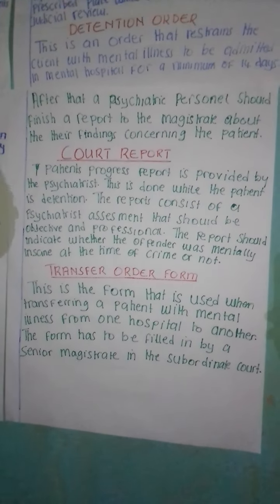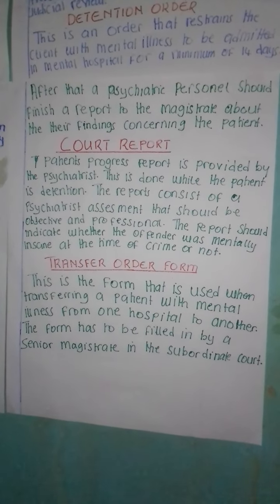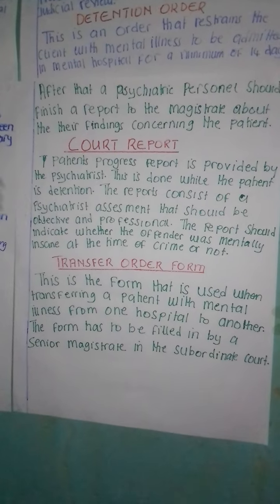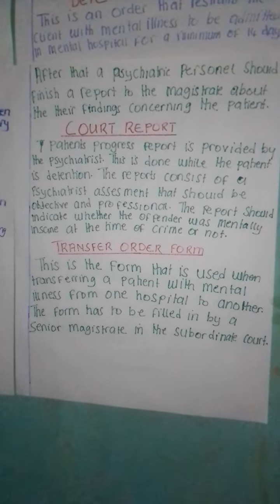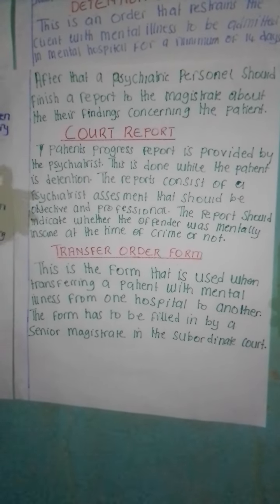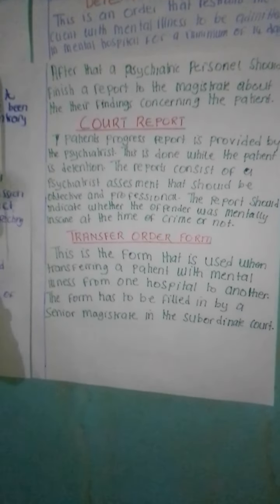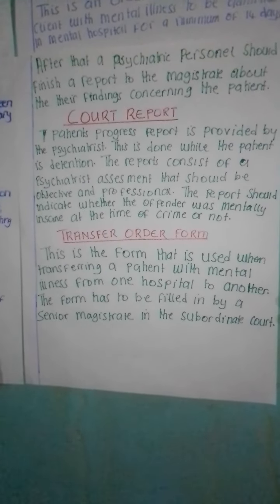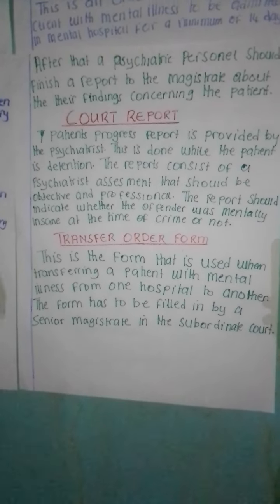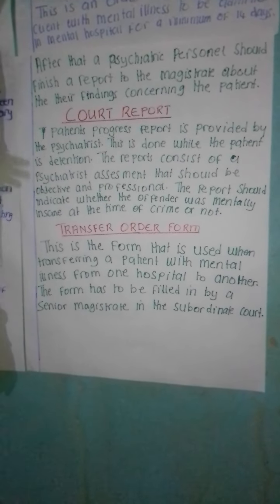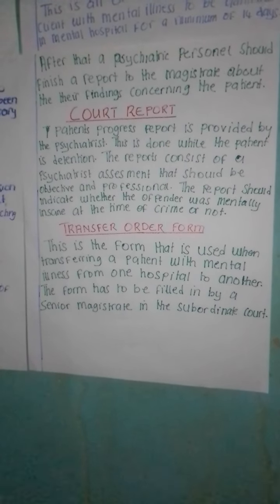Then we have court reports. Under court reports, a patient progress report is provided by the psychiatrist during their period of detention. The report consists of a psychiatric assessment that should be objective and professional. The report should indicate whether the offender was mentally insane at the time of the crime or not.